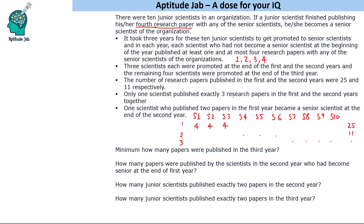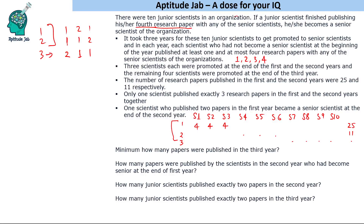Only one scientist published exactly three research papers in the first and second years together. For a scientist finishing in three years, the minimum is one paper per year. So possibilities for the first two years are: one plus one, two plus one, or one plus two — totaling two or three papers across years one and two. If a scientist publishes three papers in years one and two combined, they publish one paper in year three. The other three scientists promoted in year three cannot have published three papers across years one and two.